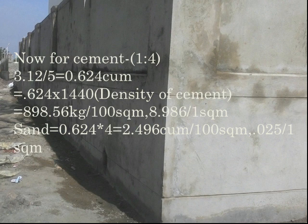For 1 square meter it is 8.986 kg. For sand, that is 0.624 multiplied by 4, which equals 2.496 cubic meters for 100 square meters, and 0.025 cubic meters for 1 square meter.